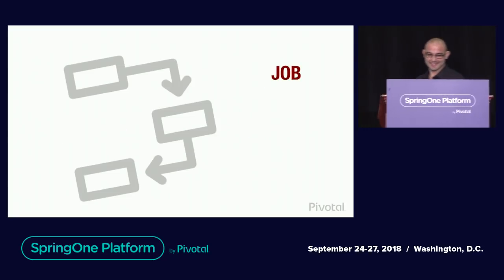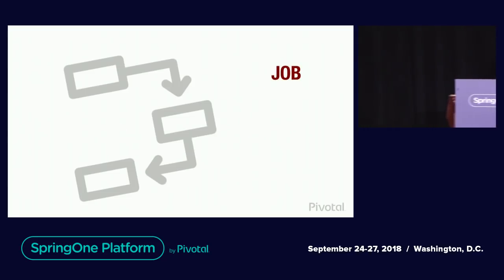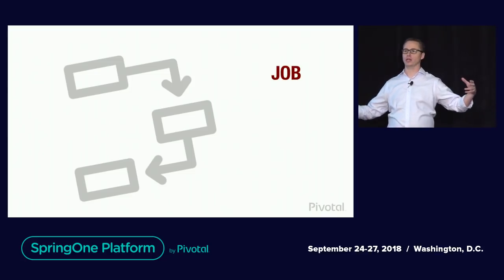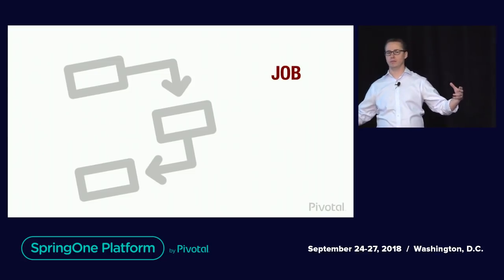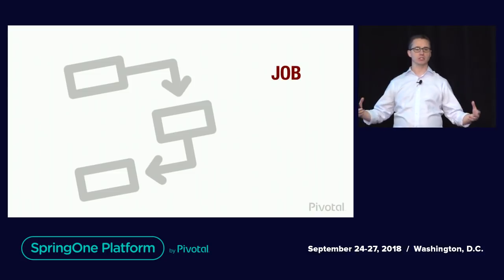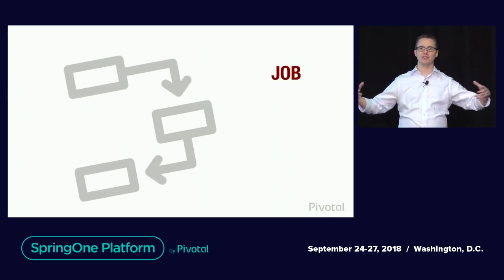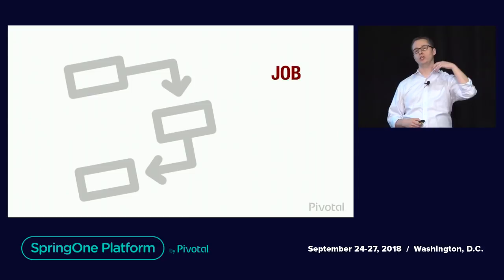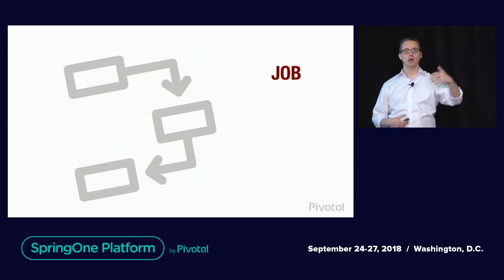So — a job. A job is the flow that you're going to execute within batch processing. It may be multiple steps, multiple things that need to happen. But when you kick off a job, the expectation is that there's no additional interaction or interruption until it completes.